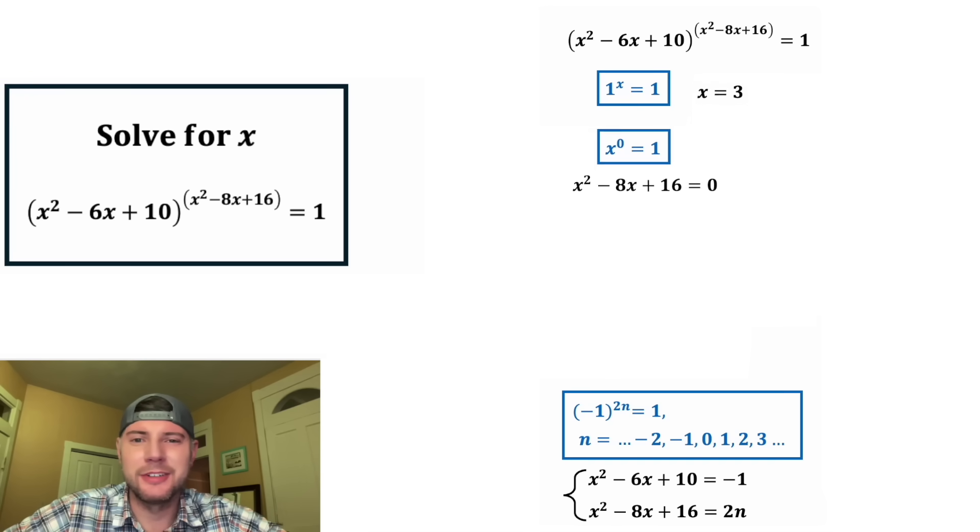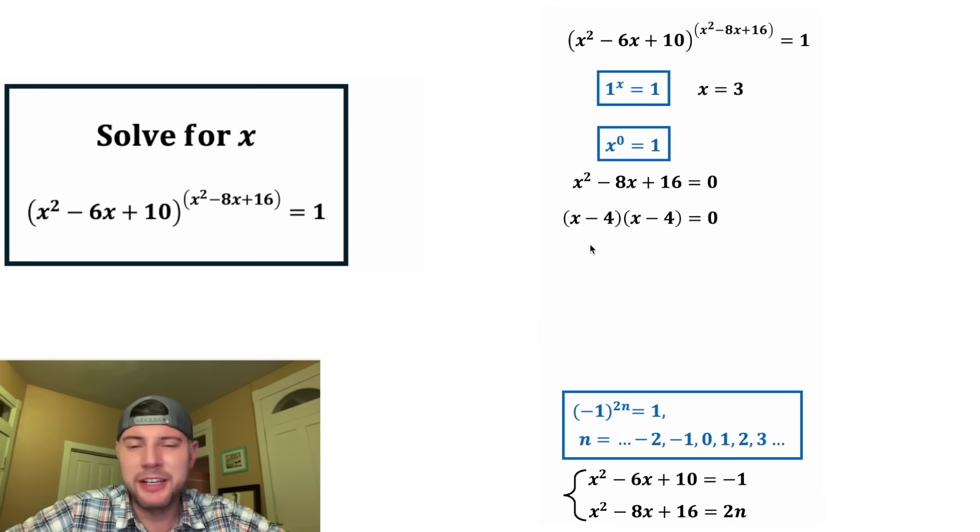Let's check out scenario 2. From here, this trinomial is already equal to 0. So let's factor it. Once again, to get x squared, we're going to have x and x. And then for the rest of it, we need two numbers that add to negative 8 and multiply to 16. That's going to be negative 4 and negative 4. And then the quantity x minus 4 times the quantity x minus 4 is the same thing as the quantity x minus 4 squared. And the only way this is going to be equal to 0 is if x minus 4 is equal to 0. We can add 4 to both sides and we get x is equal to 4. This is our solution to the second scenario.